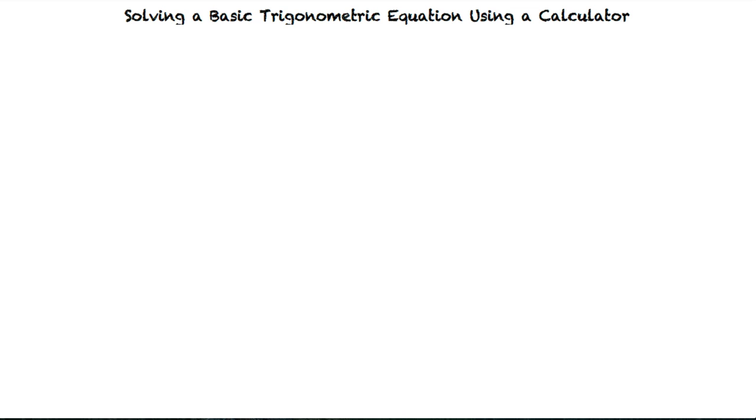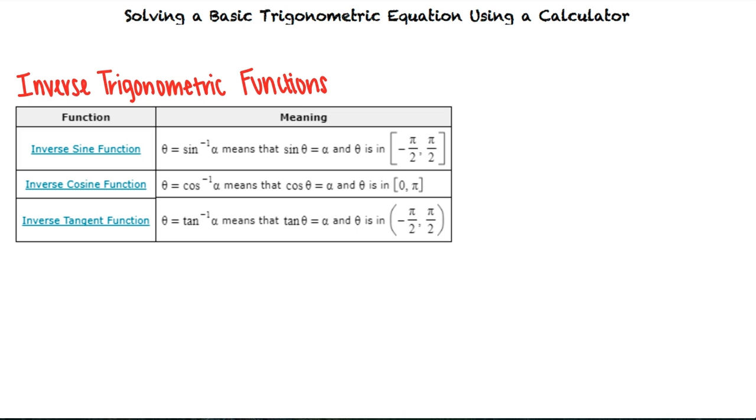For sine, cosine, and tangent, we have the following. Theta equals inverse sine of a means that sine theta equals a, theta equals cosine inverse a means that cosine theta equals a, and theta equals tangent inverse a means that tangent theta equals a.